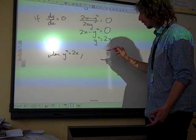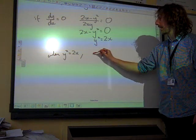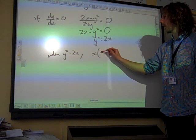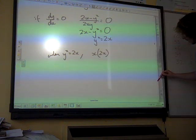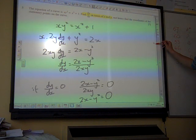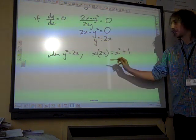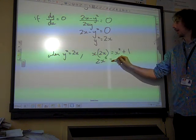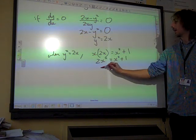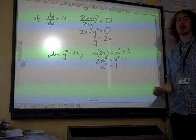So sub that back into what we started with, which was x times y squared. x times y squared equals x squared plus 1. And this is the simplest way of doing this. We've got 2x squared is x squared plus 1. So we've got x squared equals 1.